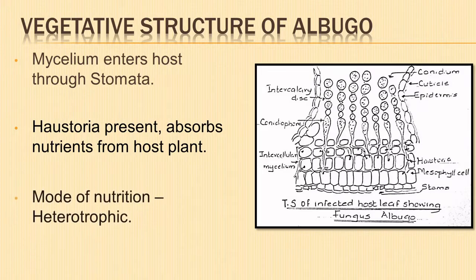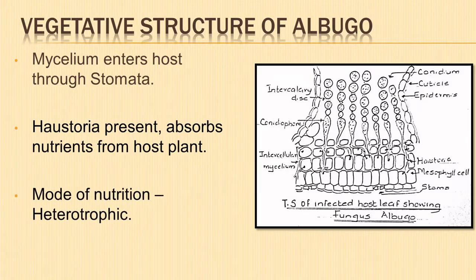Therefore, the mode of nutrition of fungus Albugo is heterotrophic.